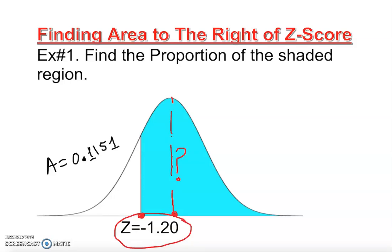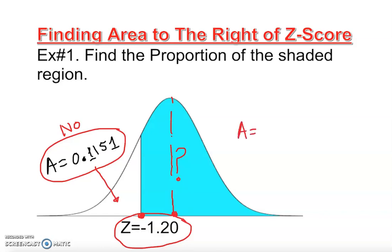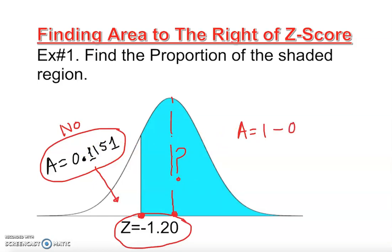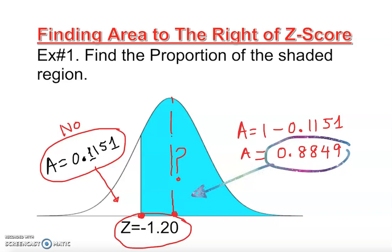Now let's check our intuition: isn't the shaded part more than 50%? So this value of 0.1151 can't be correct for the right side — by default the z-table gives area to the left. To find the area to the right, we subtract from 1: 1 minus 0.1151 equals 0.8849. That's the shaded area — 88%, which makes sense.